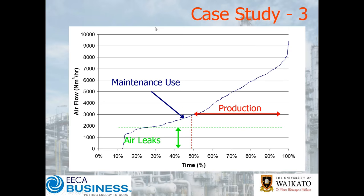Here is our 3% of the time where we've got a bit of a peak load. To give you an idea, this site was being supplied by four 250 kilowatt compressors. One of those was effectively just supplying leaks. There's a substantial amount of power there in the 48% of the time when the plant's not being used. We posed the question: do the maintenance guys actually need to use the full system air for all of that?